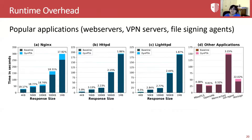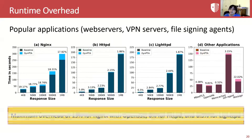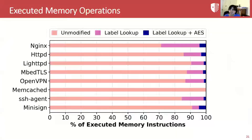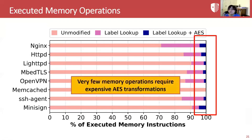We evaluate our system with eight popular applications. In each application, we annotate sensitive data such as private keys and passwords as sensitive, then harden the applications using DINPTA. By combining static and dynamic analysis, we can protect sensitive data with a limited overhead: 19% in the case of NGINX, 6% for HTTPD, and 6.5% for Lighttpd. We also recorded the percentage of memory operations that underwent DFT label lookups and AES transformations. We observed that across all applications, very few memory operations required expensive AES transformations.